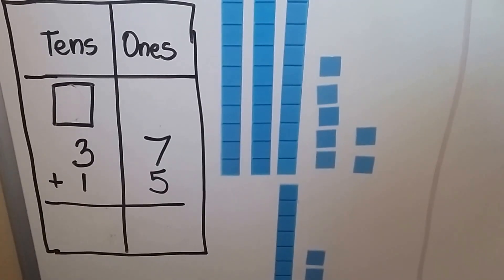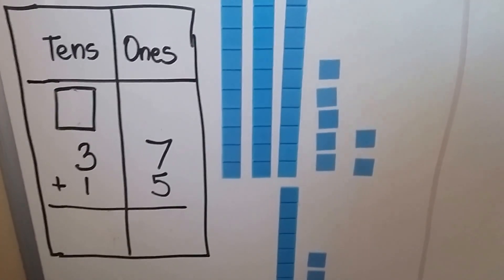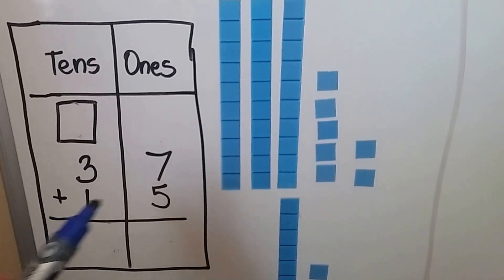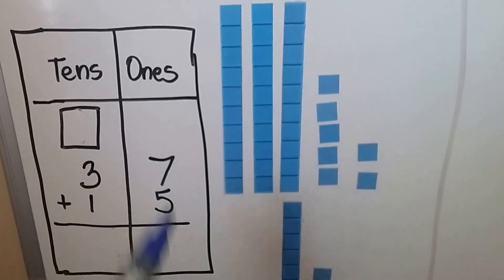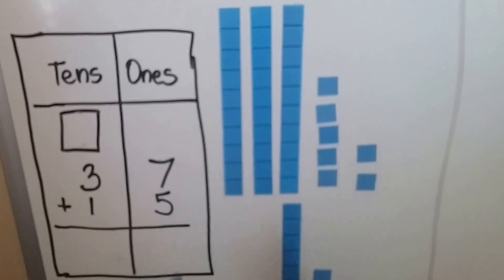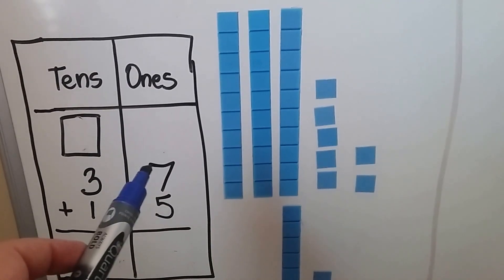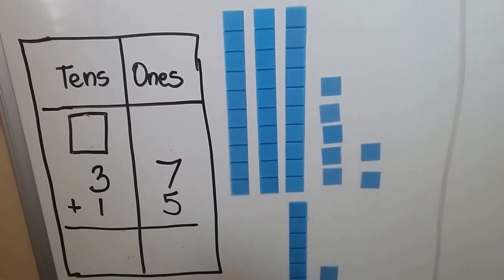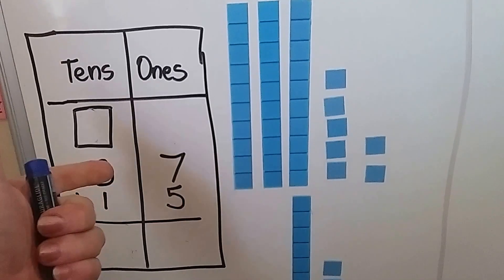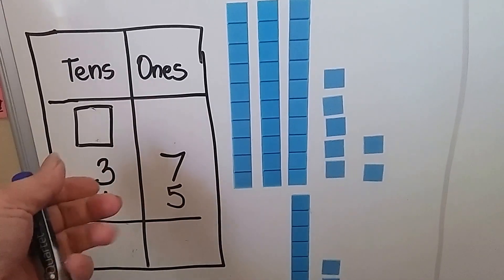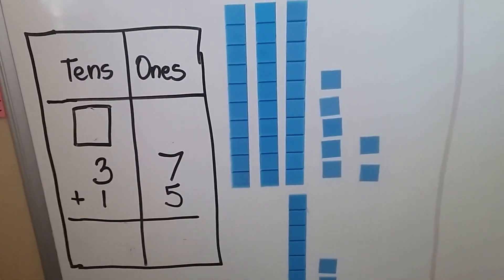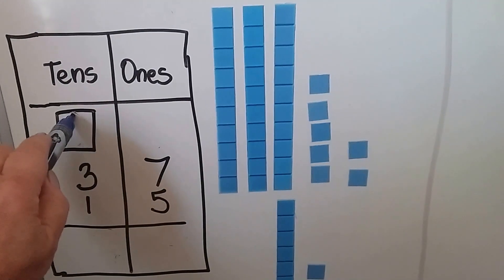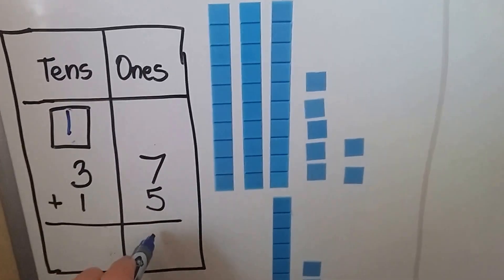We're going to add 37 plus 15. We start with the ones place. We start with the largest number and we count on the other number: 7, 8, 9, 10, 11, 12. We have a 12. A 12 is one 10 and two ones.